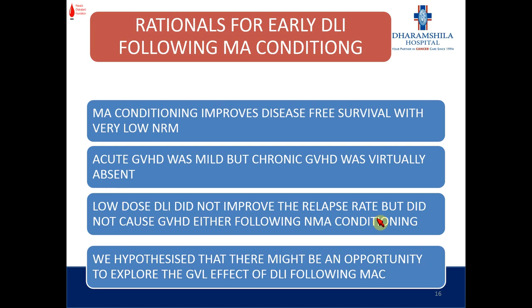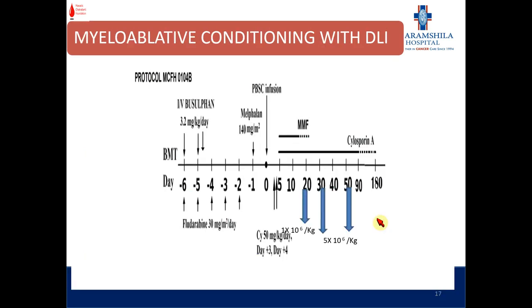Following the myeloablative conditioning, in the next protocol we employed donor lymphocyte infusion preemptively with an escalated dose. The rationale was our hypothesis that there might be an opportunity to explore the GVL effect of DLI following myeloablative conditioning. We employed escalated doses of DLI starting from day 21 post-transplantation, then day 35, then day 60.